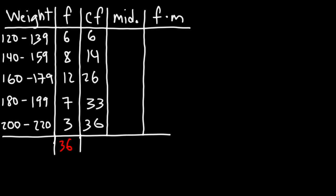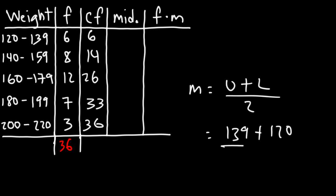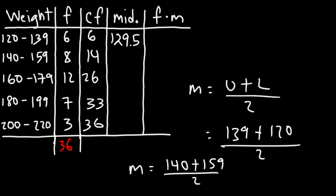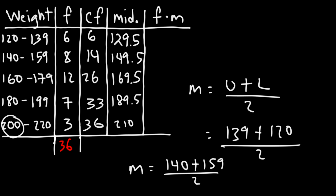Now let's determine the midpoint values: upper boundary plus lower boundary divided by 2. For 120 to 139, that's 120 plus 139 divided by 2, which is 259 divided by 2, giving a midpoint of 129.5. For 140 to 159, it's 140 plus 159 divided by 2, giving 149.5. We can see the midpoint is increasing by 20, so the next ones are 169.5 and 189.5. For 200 to 220, 200 plus 220 is 420 divided by 2, giving a midpoint of 210.